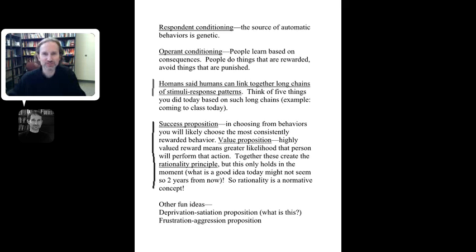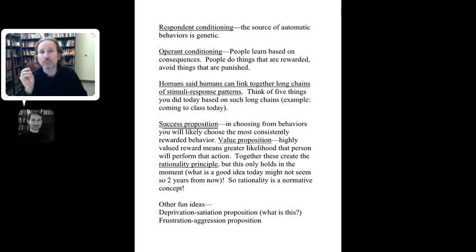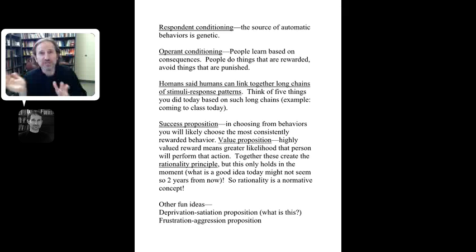Homans comes up with three propositions — general rules, if you will. One is the success proposition: if you have different behaviors to choose from, you're most likely to choose what's consistently rewarded. If you regularly get a reward for doing selection A but it's irregular for B and C, you'll eventually figure that out and go to A — that becomes your preference.